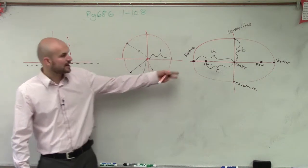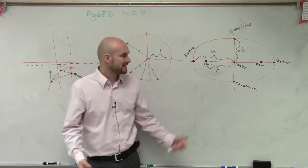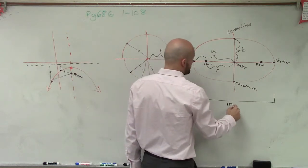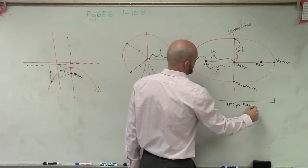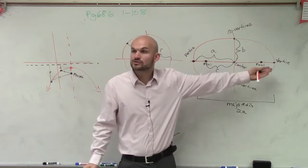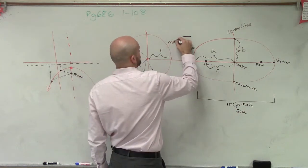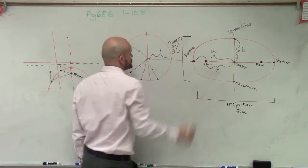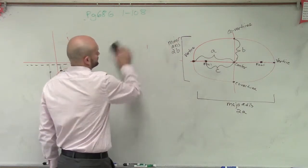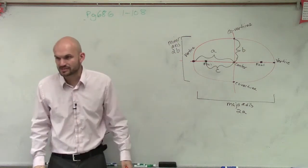So now for a horizontal ellipse we have: vertices, co-vertices, center, and foci. The segment from vertex to vertex is what we call our major axis, and the major axis is equal to 2a — since the distance from center to vertex is a, twice that distance is 2a. The segment between the co-vertices is what we call our minor axis, and that distance is 2b.